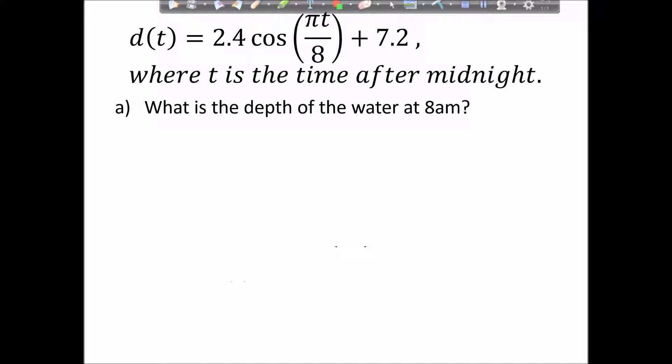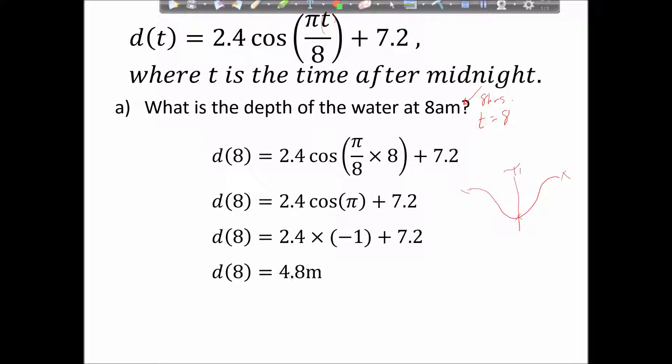And the next question, we're asked for eight hours later. What is the depth of the water at 8am? Well, that's eight hours later, so that means t is equal to eight. So I want to put eight in for my t. So I get π/8 × 8. Well, that's nice, that number cancels out nicely, so I just end up with cos(π). Thinking about our basic graph, it's at its absolute minimum at π. So cos(π) equals negative one. So we're at our minimum at 4.8 meters. So we had our maximum at 9.6 and our minimum at 4.8. So those are two key points that we're going to be using.